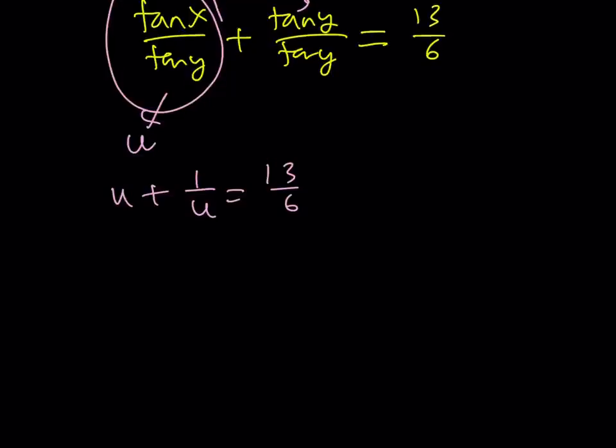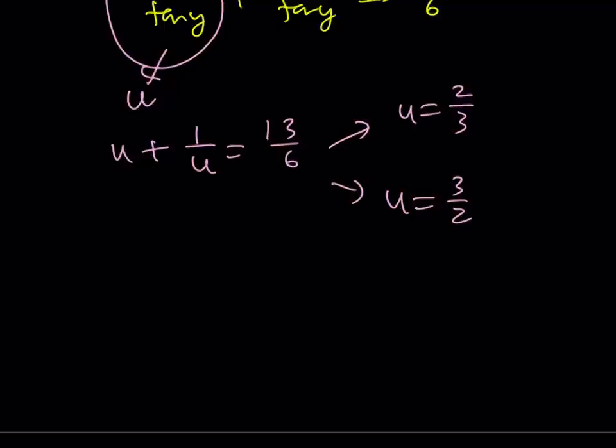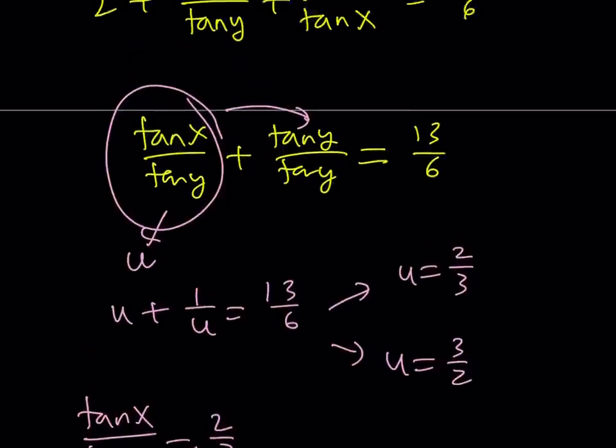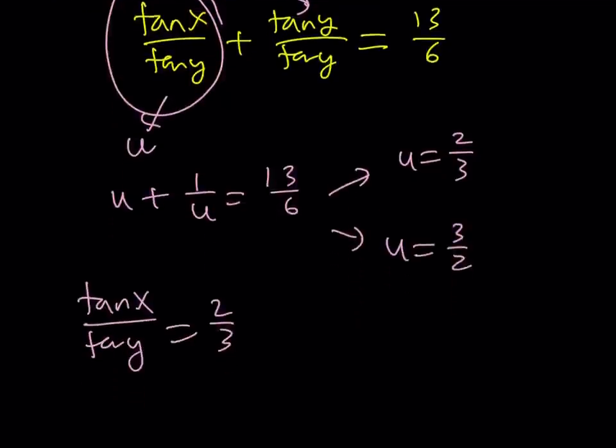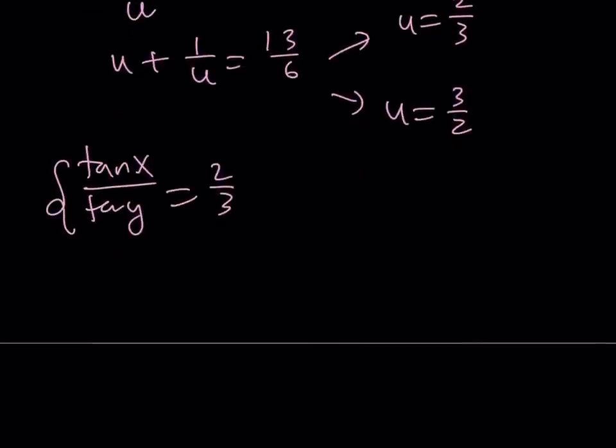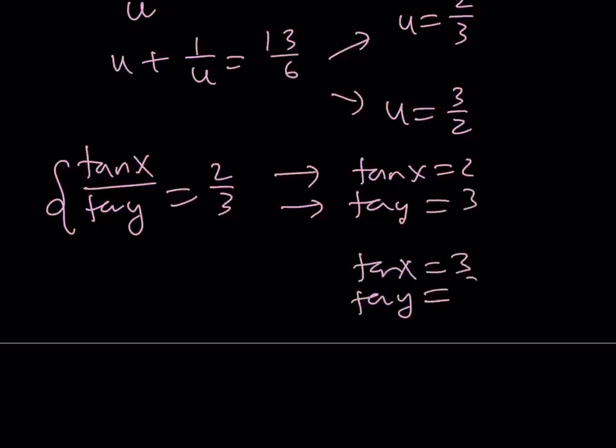To keep the long story short, you're going to get two solutions: u = 2/3 and u = 3/2. So this gives us tan x/tan y = 2/3. What do I know? I do know that tan x + tan y = 5. So I'm talking about two numbers whose sum is 5 and they're in the 2 to 3 ratio. This implies that tan x needs to be 2 and tan y needs to be 3, or vice versa: tan x = 3 and tan y = 2. And this pretty much gives us the same solutions.